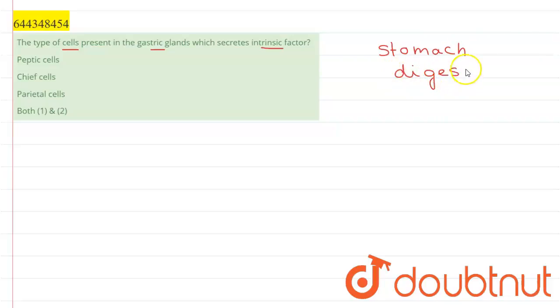Now, this intrinsic factor is a glycoprotein which is secreted in the stomach which helps in digestion. This intrinsic factor is denoted by IF. This IF is secreted by the parietal cells.